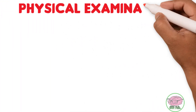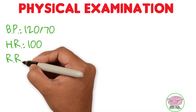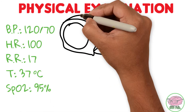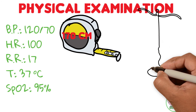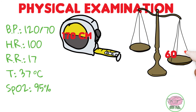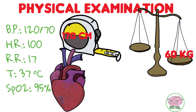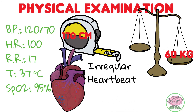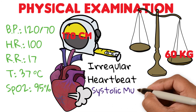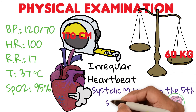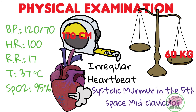During the physical examination, you found stable vital signs. He measures 170 centimeters and weighs 60 kilograms. The only relevant findings are irregular heartbeats and the presence of a systolic murmur in the fifth intercostal space mid-clavicular line. The lungs are clear, the abdomen is normal, and the rest of the physical examination is completely normal.